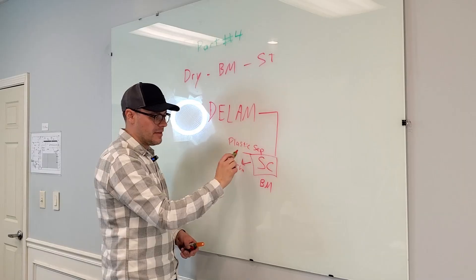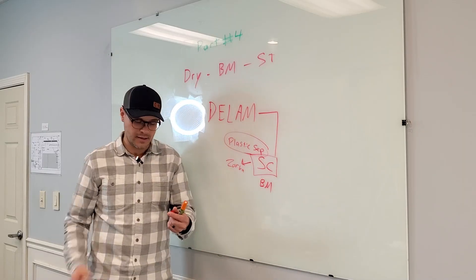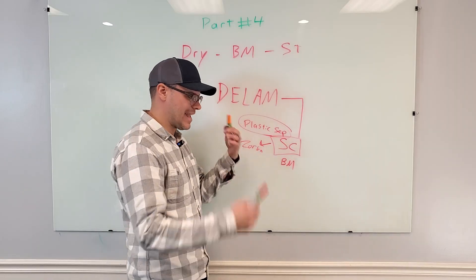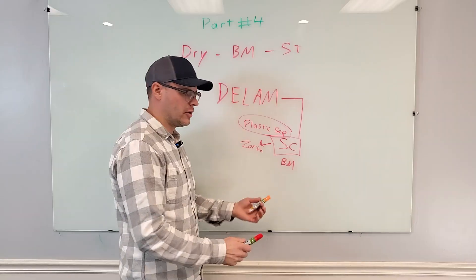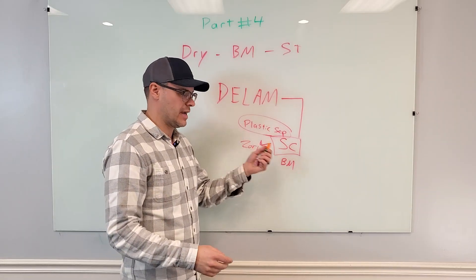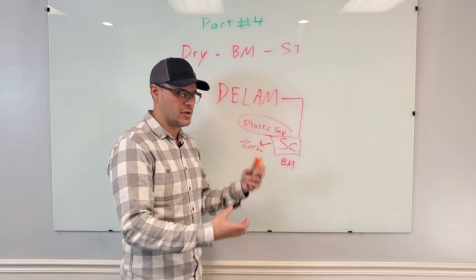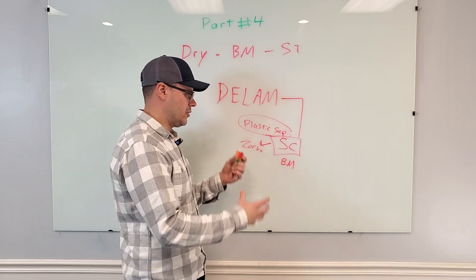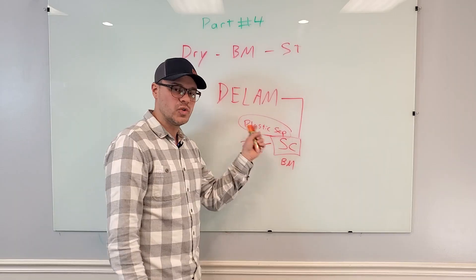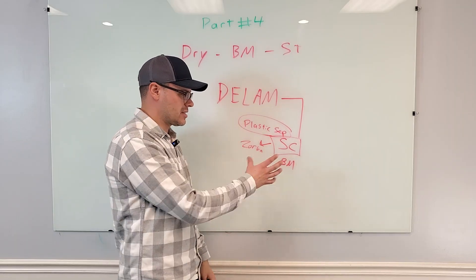Now this here is kryptonite to processing anything. This plastic separator will give you more trouble than anything you've ever dealt with in any process. I have yet to see a material that packs like concrete but it's still soft, so you can't chip it away like concrete. It will wrap around stuff, it will pack into stuff. This plastic separator, you want to remove this as soon as you possibly can from the process.